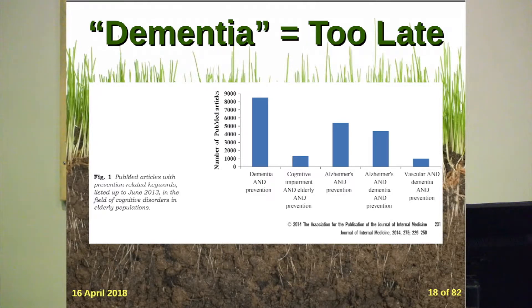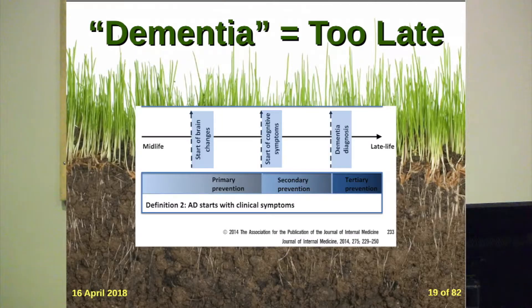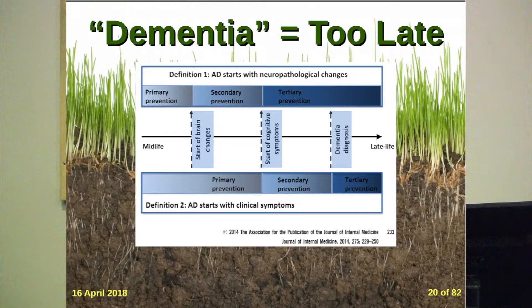Luckily, new models are emerging. Until very recently we had the model that Alzheimer's disease starts with clinical symptoms — brain changes nobody can detect precede the cognitive symptoms. Now we know there are brain changes we can detect, so we can start prevention even before we detect changes in the brain. And once we detect a sign of dementia, we can start secondary prevention efforts targeted to that particular dementia. I'll be talking about the primary prevention stuff later — the stuff we can all do.